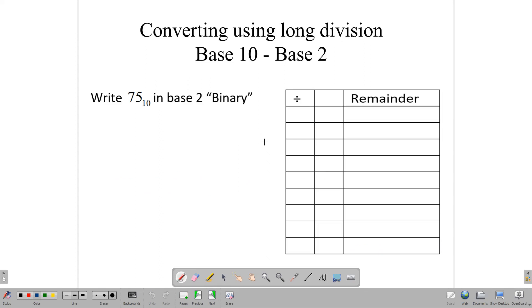The process that we use to convert from base 10 to other bases is division, and so what we're going to be doing is dividing whatever number we have by the base that we want. So in this question here, we want to write 75, which is a base 10 number, in binary or base 2. To do that, we're going to write our 75 here, and you would want to set up a table like this.